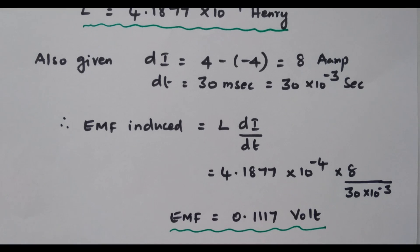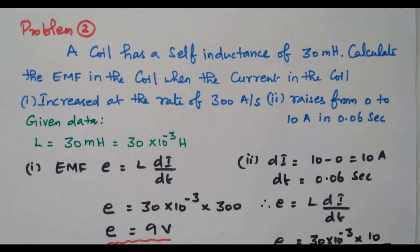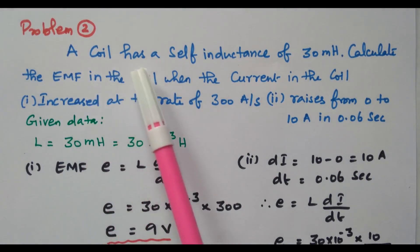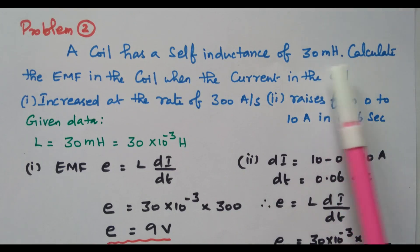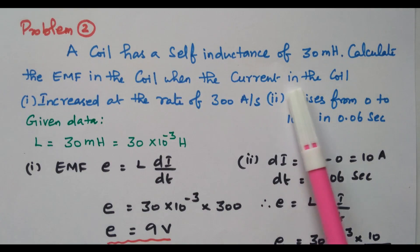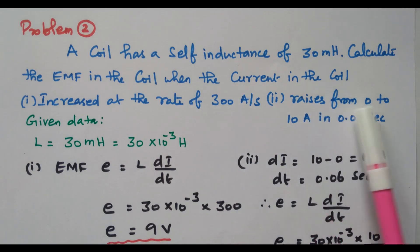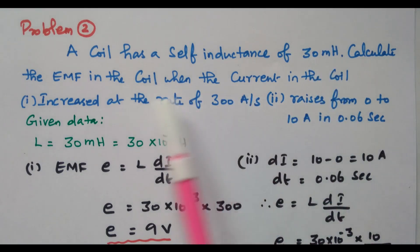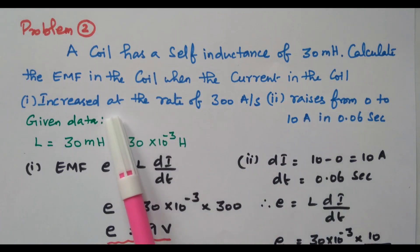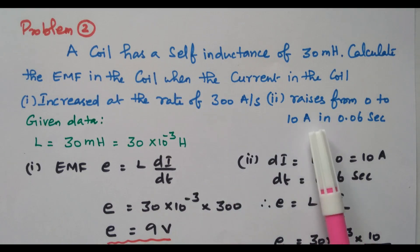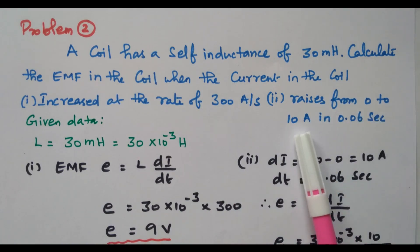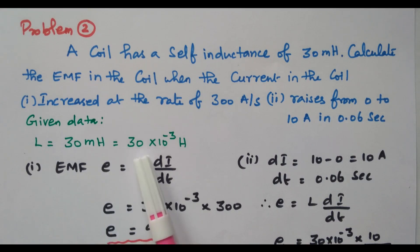Now we will go to the second problem. A coil has a self-inductance of 30 millihenry. Calculate the EMF induced in the coil when the current in the coil is increased at a rate of 300 ampere per second, and when it is raised from 0 to 10 ampere in 0.06 second. L = 30 millihenry = 30 × 10⁻³ henry.